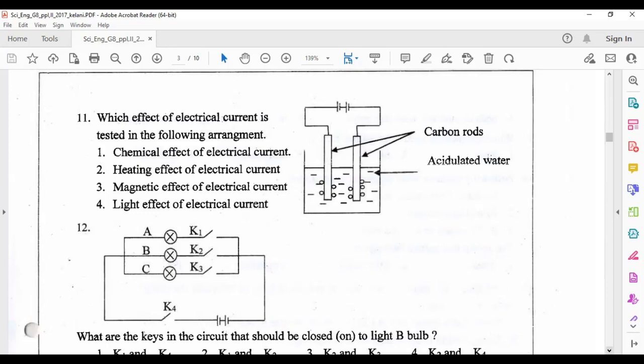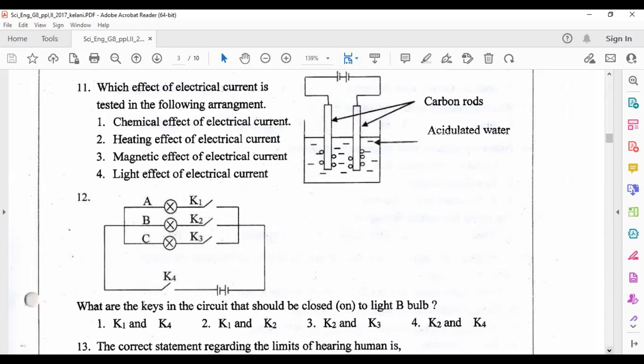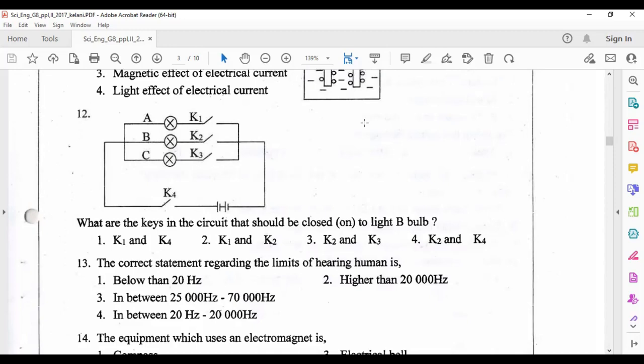Question 12: what are the keys in the circuit that should be closed to light bulb B? To light bulb B, we have to close K2 switch and also to complete this circuit, that means the current is flowing from positive terminal to negative terminal. So we have to close K4 also. K4 and K2 should close, so answer number four is correct.